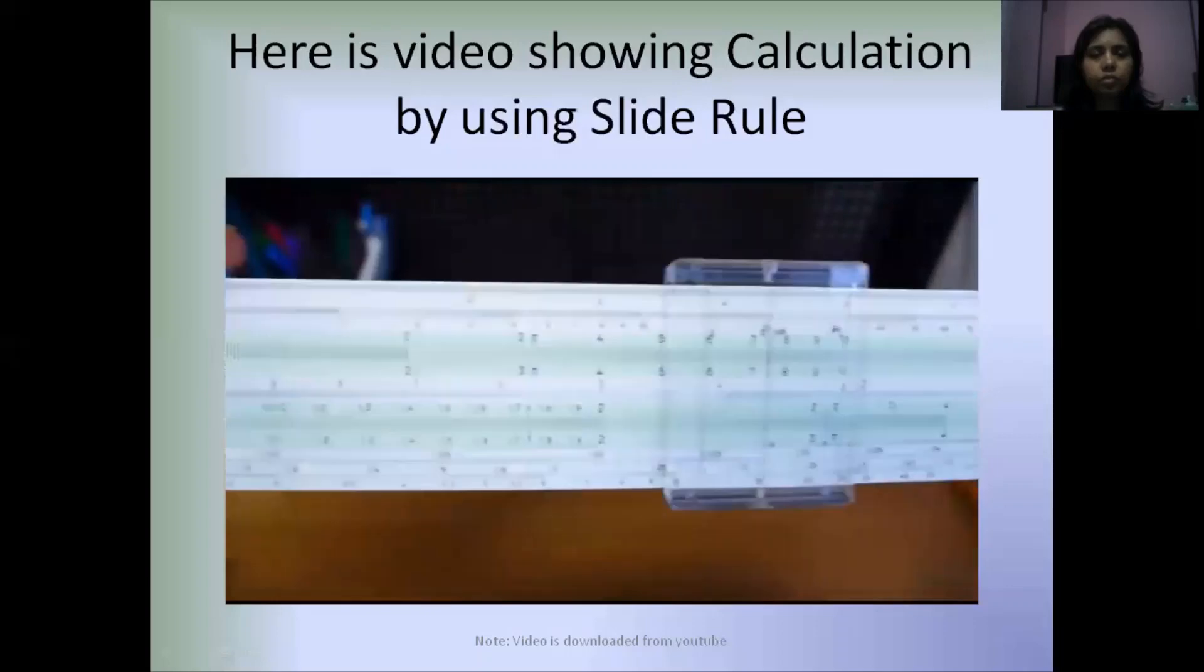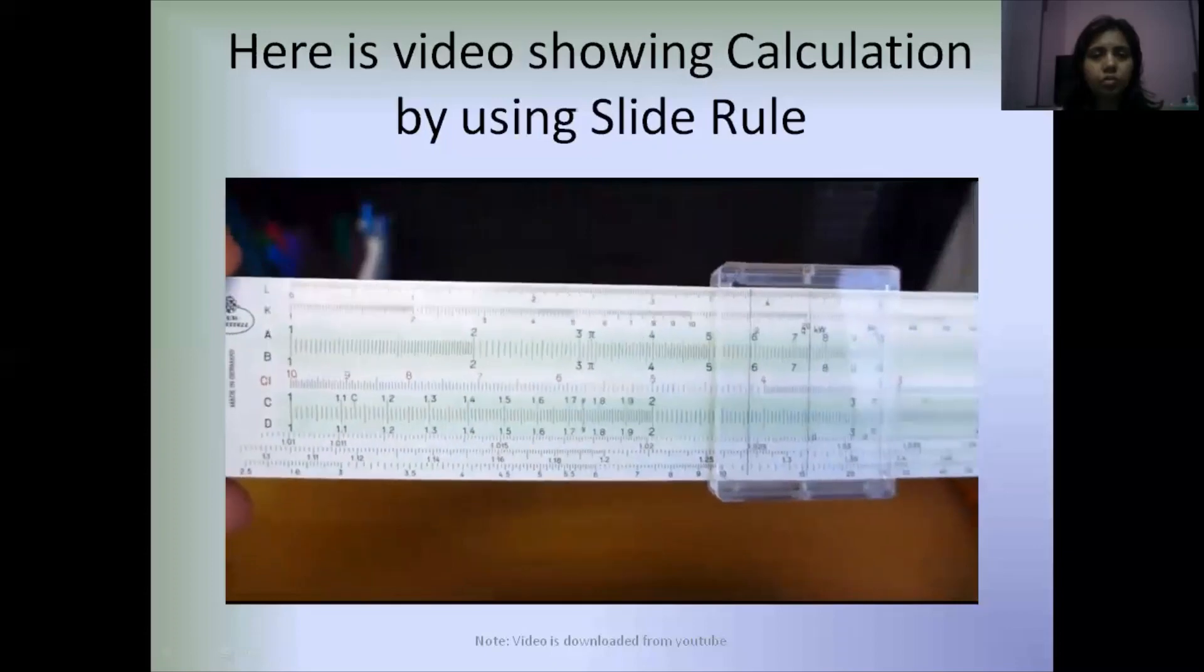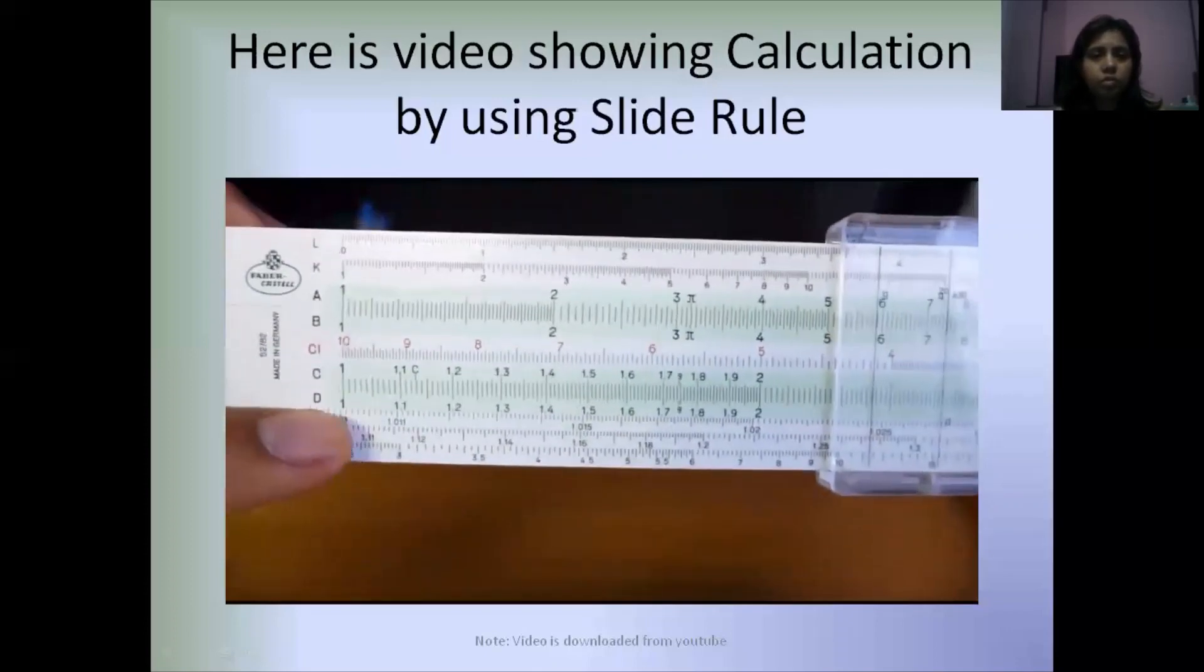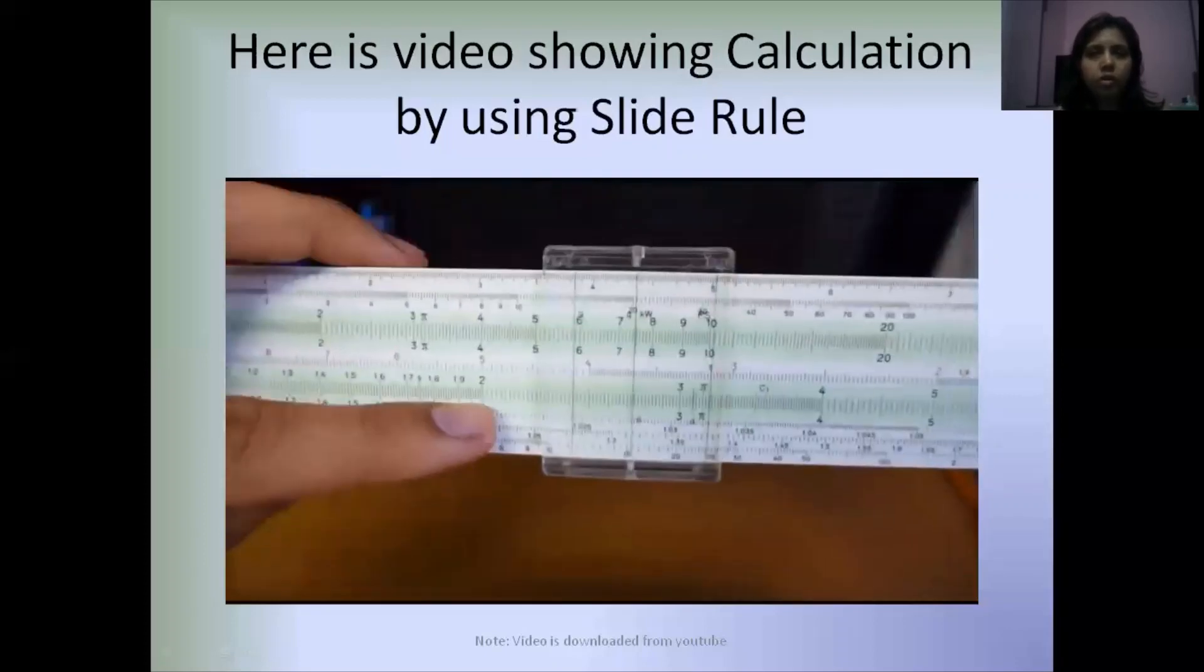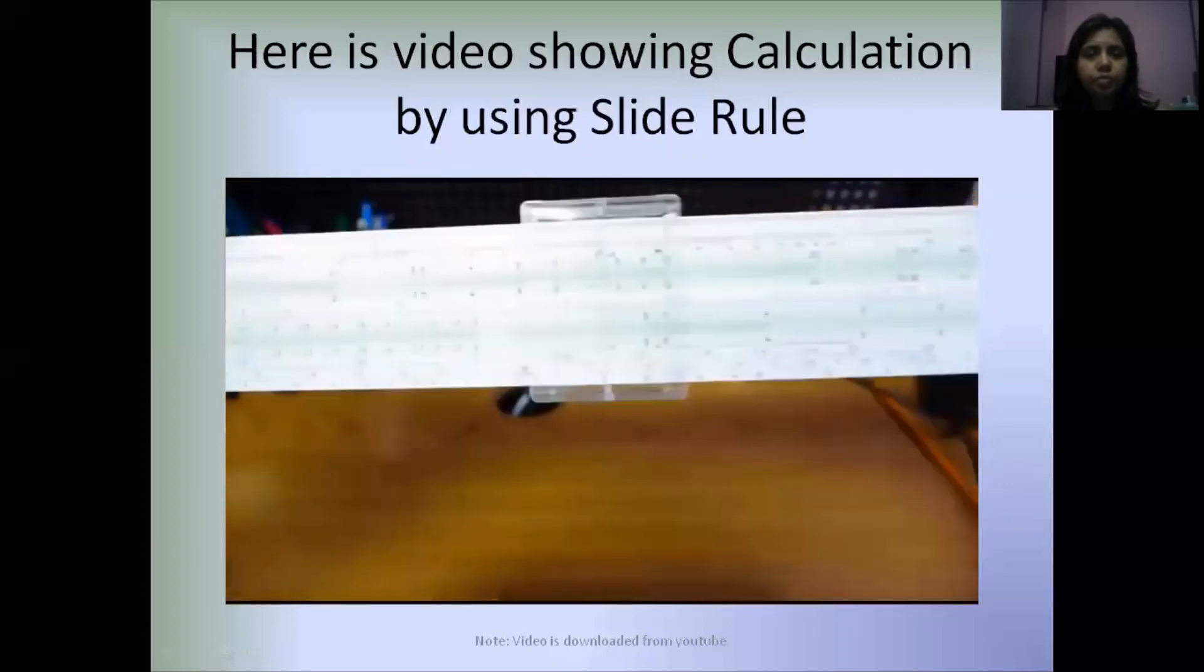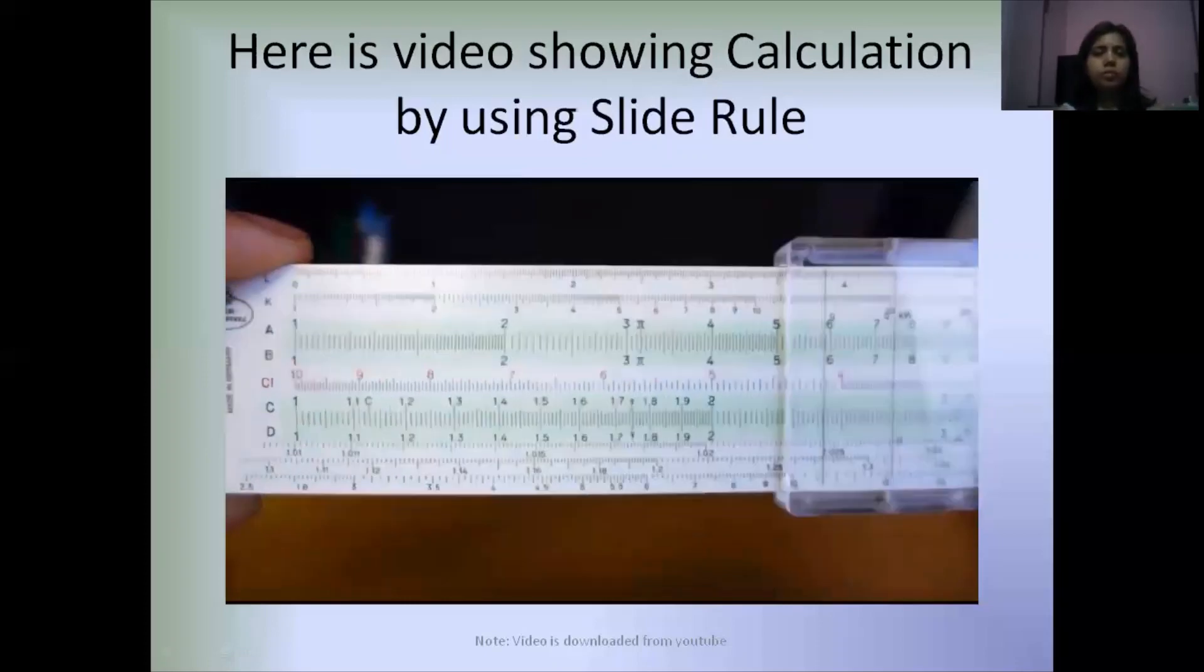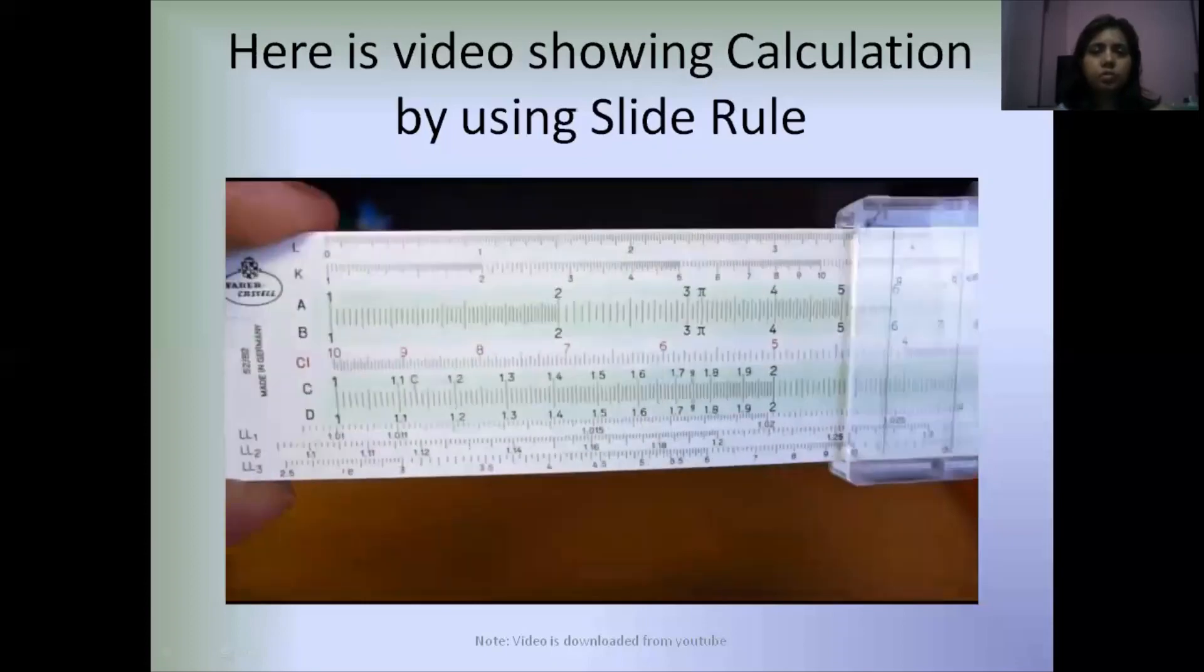The slide rules work on the properties of logs. If you add two logs and then take the anti-log, you get the multiplication of two numbers. As you can see on the C and D scales, the space between one and two is large and it gets progressively smaller between each set of two numbers by a logarithmic scale. What a slide rule does when it does multiplication is it adds the logarithm of two numbers and then takes the anti-log of the sum, which gives you the product.